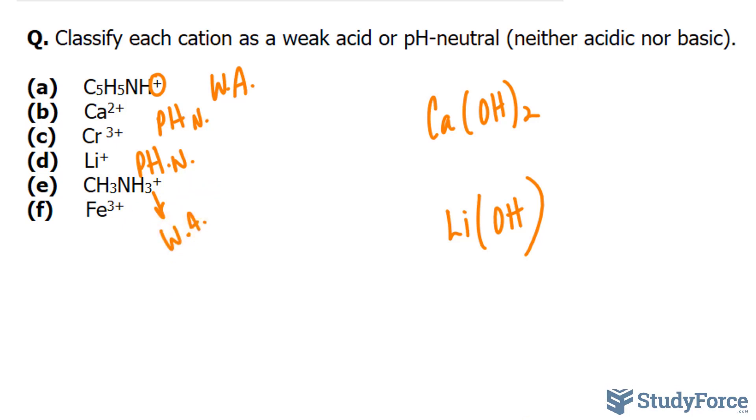And finally, we have iron ions, 3 plus charge. For the same reason as Cr3+ being a weak acid, so is this one. And there you have it. That is how to determine whether a cation is basic or pH neutral.